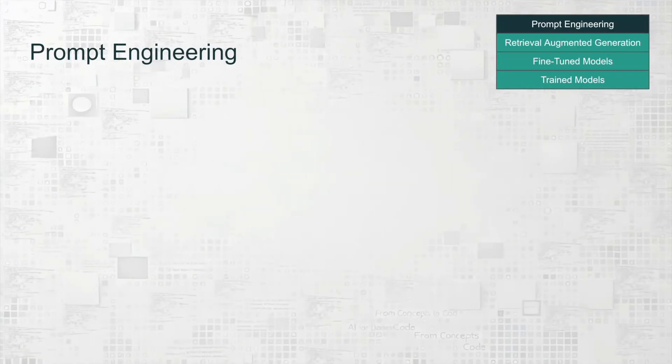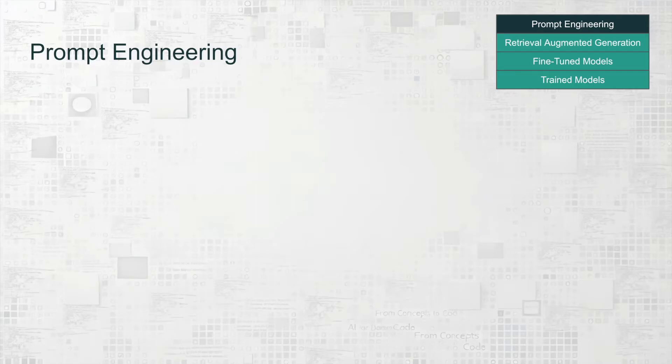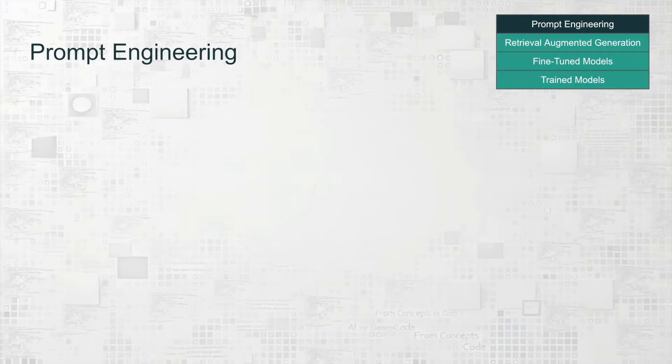Prompt engineering is the simplest and most affordable way to start using LLMs. It doesn't change the model, but instead focuses on structuring your prompts to get the best results from AI. You provide the LLM with carefully phrased prompts to guide its response. And since the model is generalized, the accuracy depends on how well the prompt is structured. This often requires tweaking through a trial and error approach. Adding context, like examples of your potential response, helps improve the quality of the response.